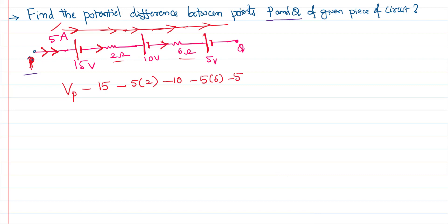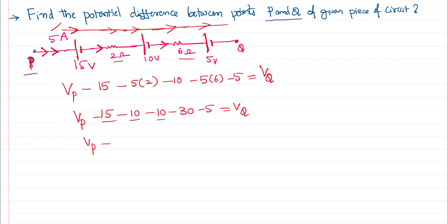Again, this potential drop is negative because you are facing the positive plate of the battery first: minus 5. This equals the potential at point Q, because the algebraic sum of potentials must be consistent — EMFs equal to potential drops. Simplifying: Vp minus 15 minus 10 minus 10 minus 10 minus 5 equals Vq. So Vp minus 70 equals Vq, meaning Vp minus Vq equals 70 volts.